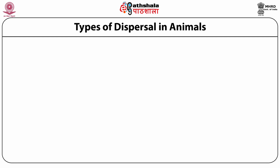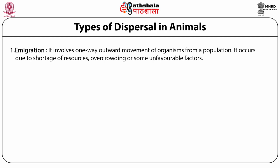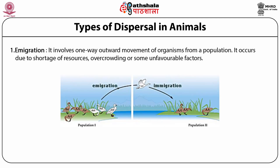In animal populations, dispersal can be divided into different forms. First is emigration, which involves one-way outward movement of organisms from a population. Emigration can occur due to shortage of resources, overcrowding, or some unfavorable social or physical factors. For example, in a bird population, when some birds move away from the original population to another place, that is called emigration, as you can see in Figure 1.